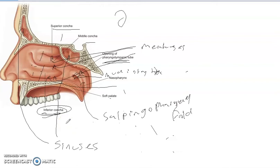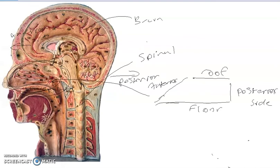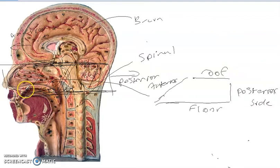What we've just covered is all part of the nasopharynx. Going back to the main diagram, this area we've covered — bounded by the hard palate and soft palate — is all the nasopharynx. We're going to go down now into the mouth and work on a bit of the oropharynx and see what's there.